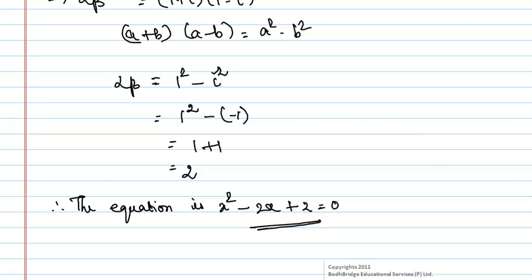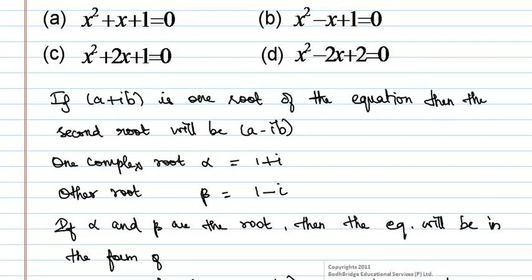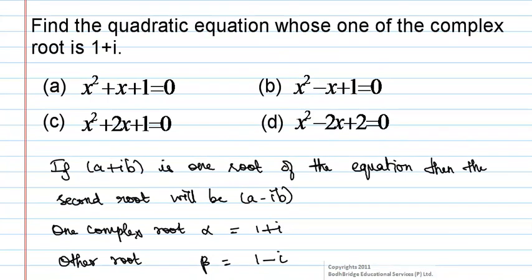Hence, the answer is x² - 2x + 2 = 0, which is option D.